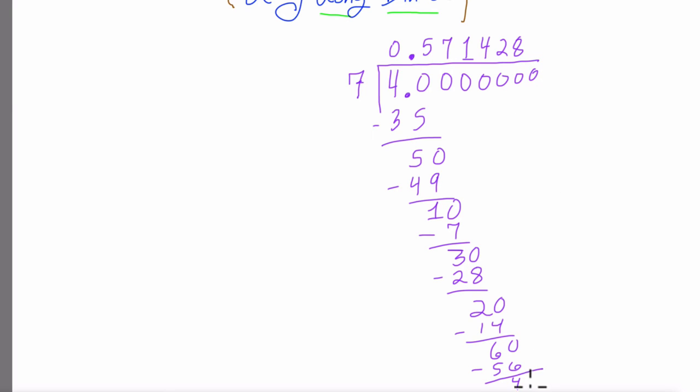Now 7 goes into 40, right? Five times. And what's starting to happen here is our decimals are beginning to repeat. And that makes sense to me because this is actually a repeating decimal.